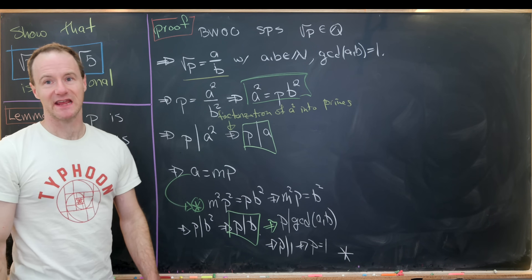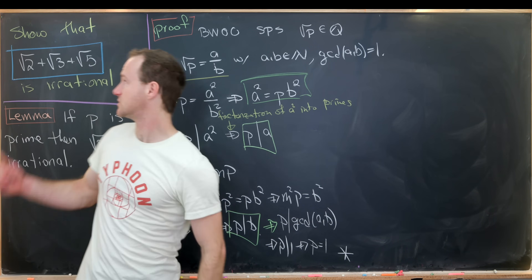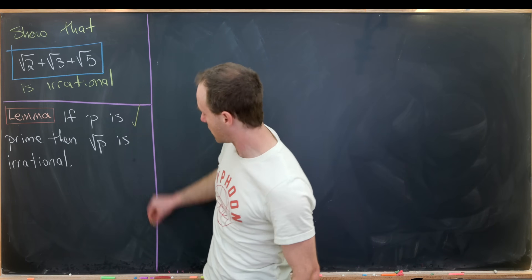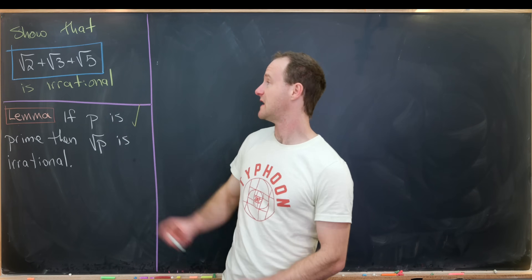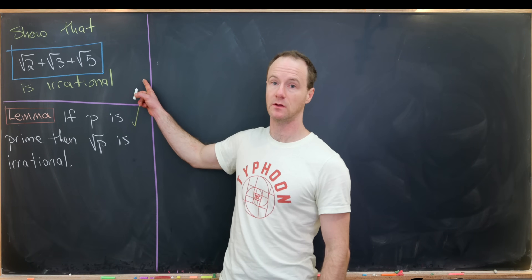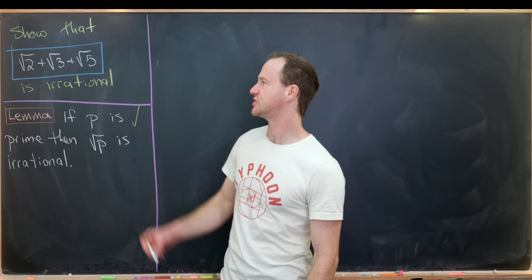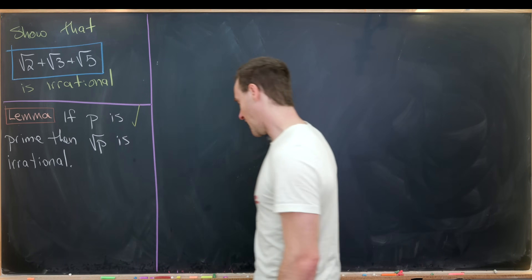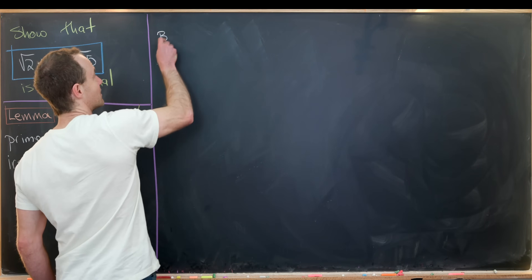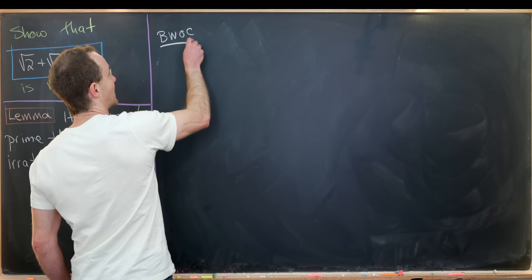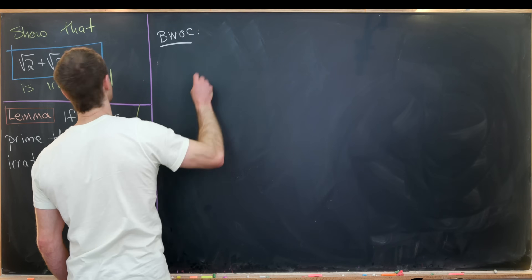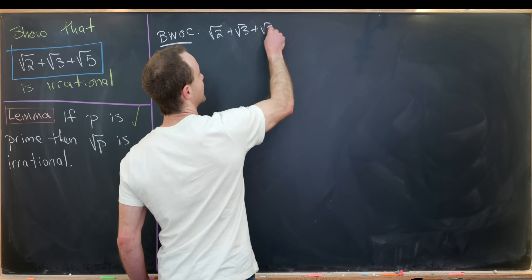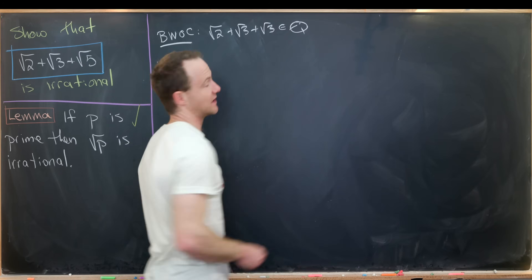Now that we've proved the lemma holds for all primes, we're ready to move on to our main goal: showing that root 2 plus root 3 plus root 5 is irrational. We'll use the same first step. By way of contradiction, let's suppose that root 2 plus root 3 plus root 5 is a rational number.